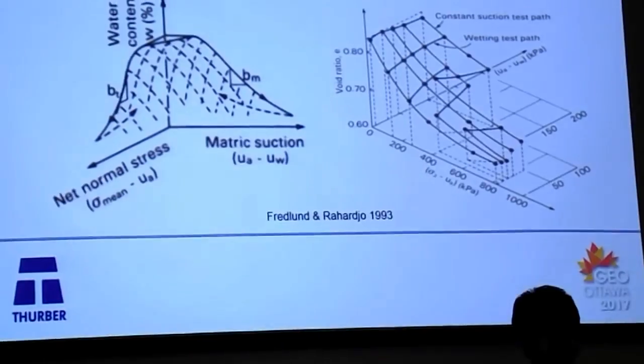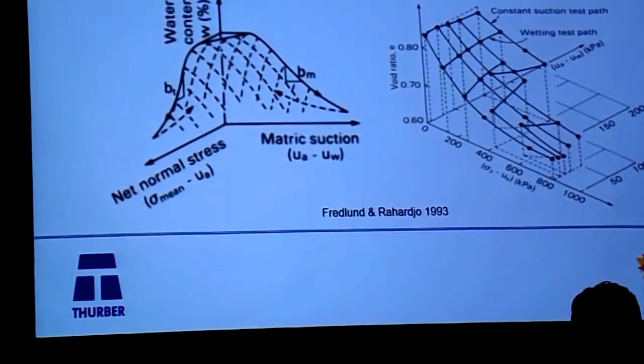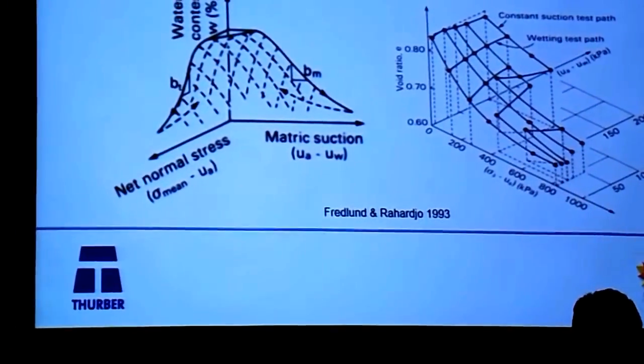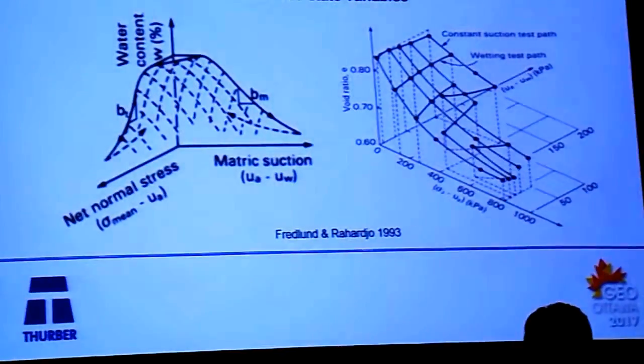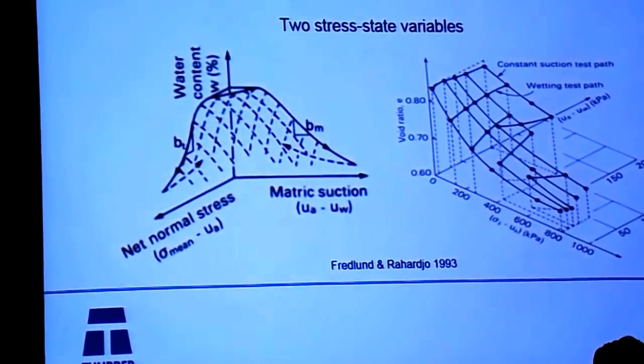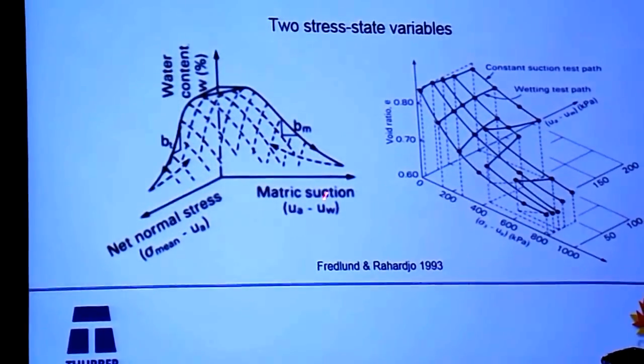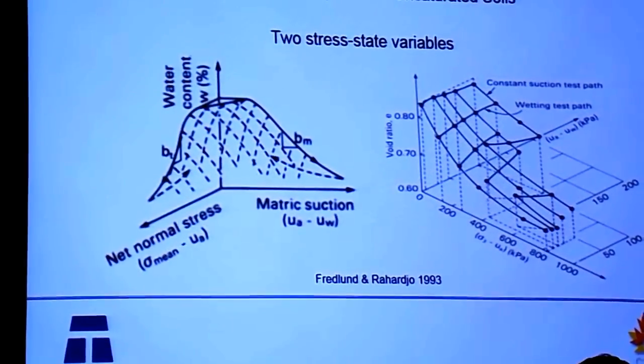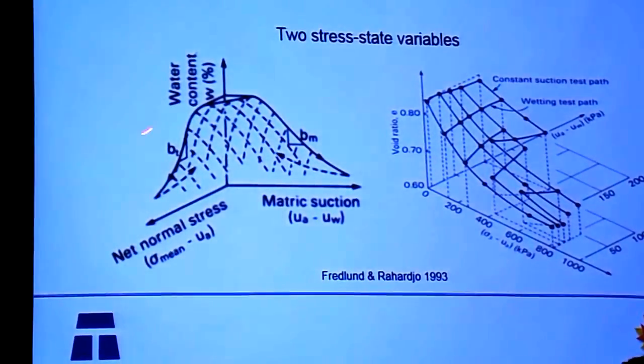I would like to acknowledge my co-authors, Dr. Sam Pruskin and Treyfus Moore. In unsaturated soils, unlike saturated soils where we need just one stress-state variable — effective stress based on Terzaghi's equation — to address geotechnical properties, we need two stress-state variables: matric suction and net normal stress. This is the volume change behavior of an unsaturated soil.